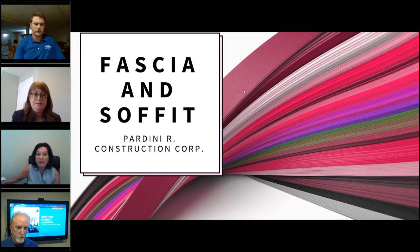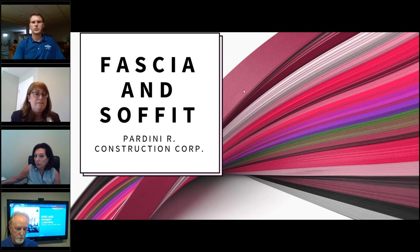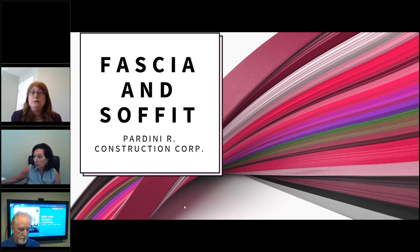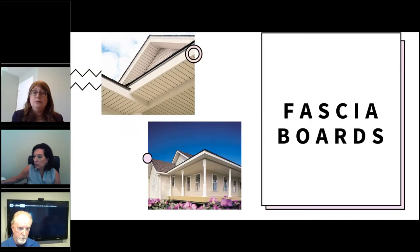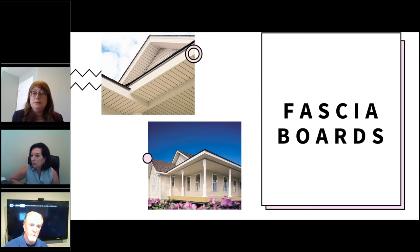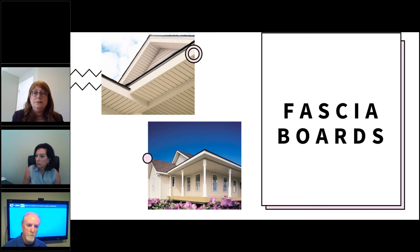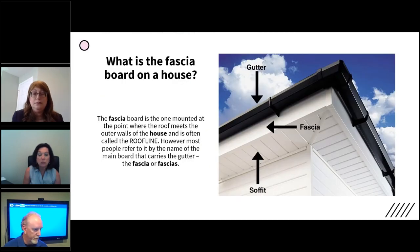My name is Luciano Oliviero from Pardini Construction. Today I would like to speak about fascia and soffit — the aspects, the importance, the benefits, and the role they play as a building structure. Let's start with the fascia boards. If you don't know exactly what it is, just a simple clarification: the fascia board is the white board that's behind the gutter. It's the point where the roof meets the outer walls on the house, often called the roof line. Most people just call it the fascia or fascia boards.